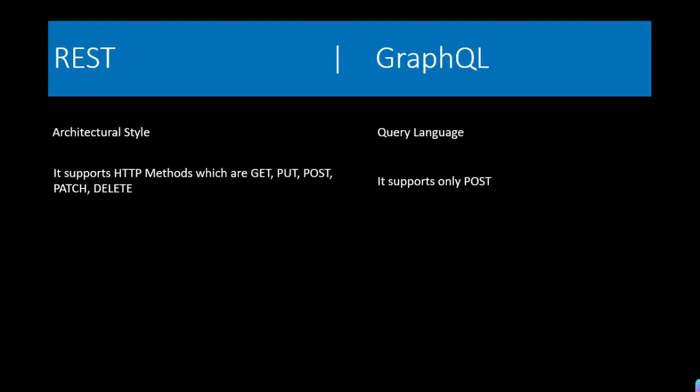Both REST and GraphQL support HTTP methods. REST supports GET, PUT, POST, DELETE, and PATCH — as we all know from working with REST for a long time. But GraphQL only supports the POST method. We will now see the GraphQL playground and look at the network tab to confirm which HTTP method it supports.